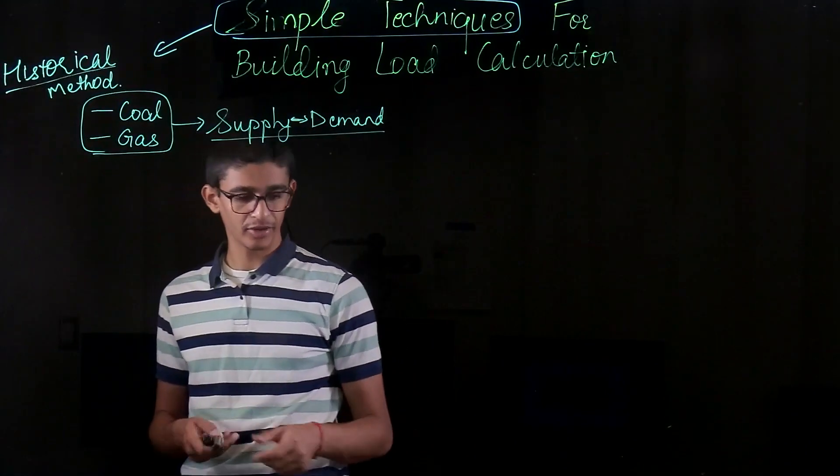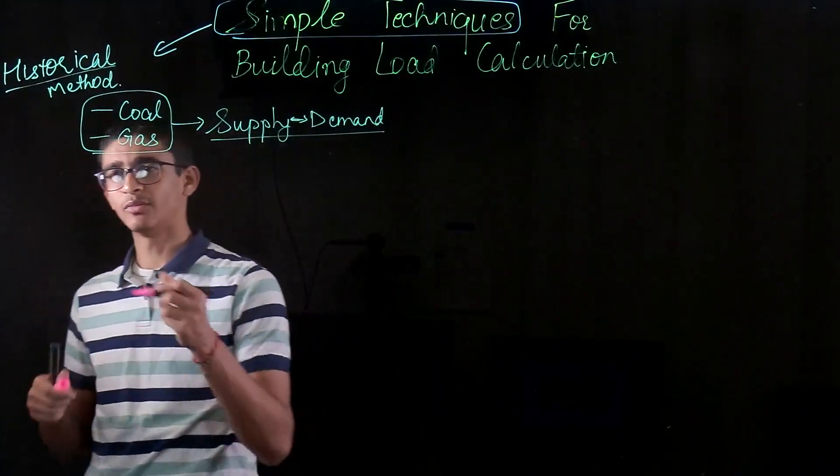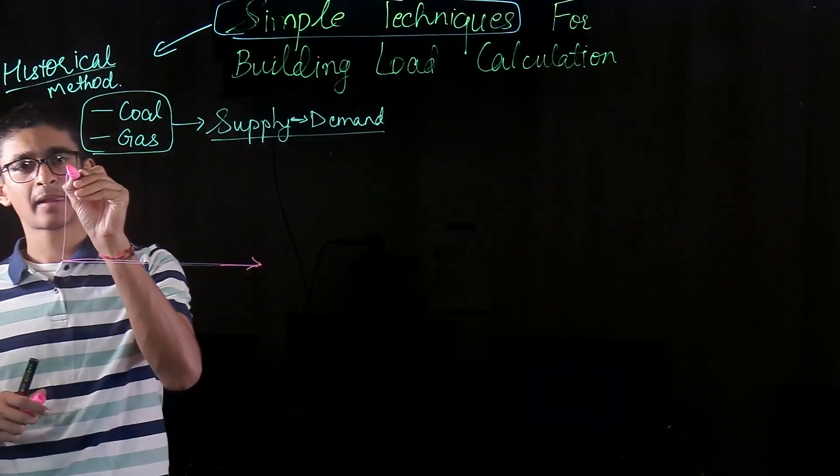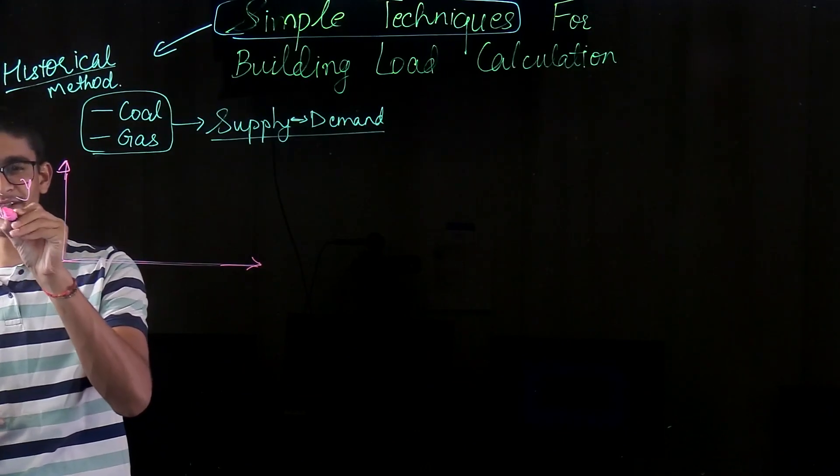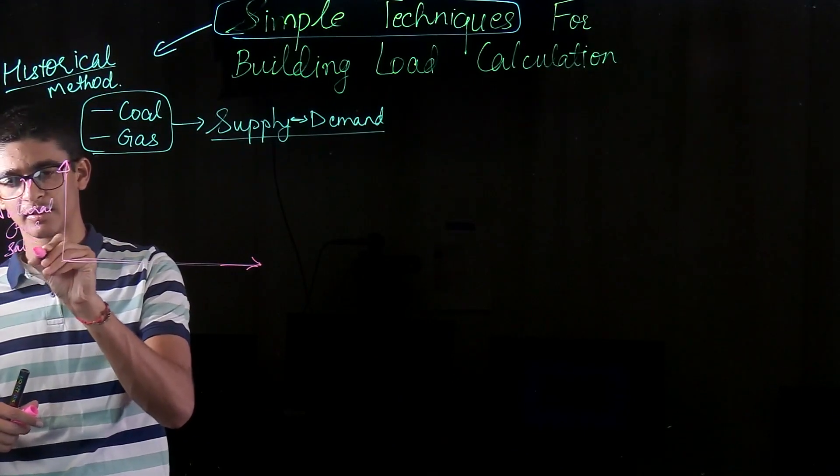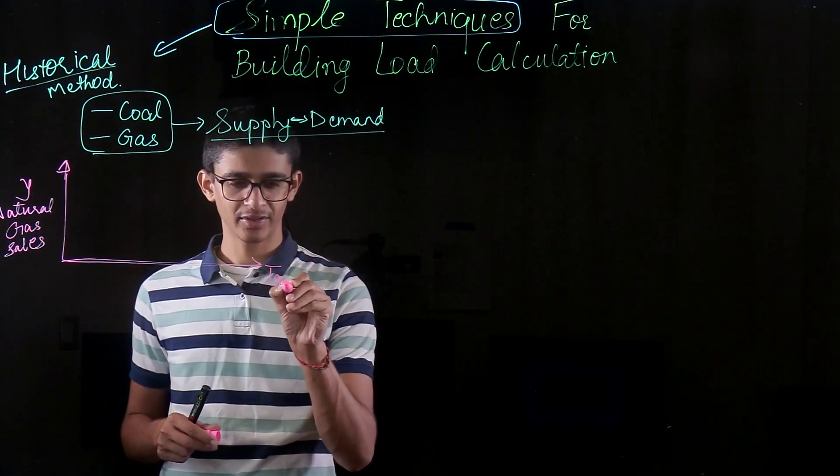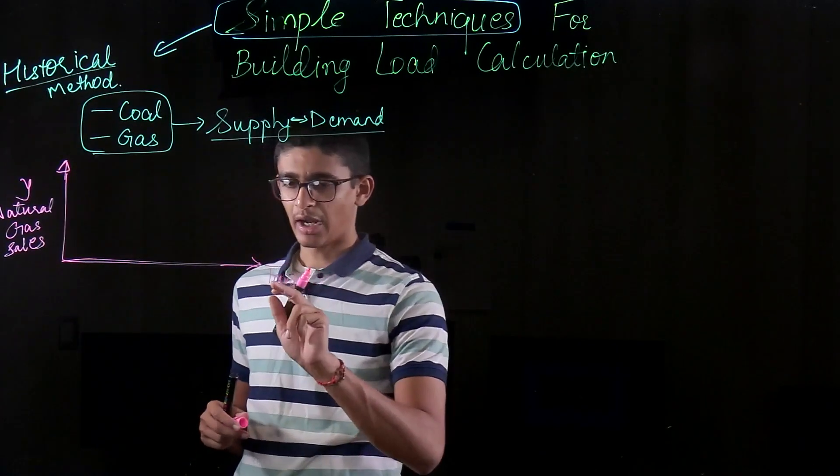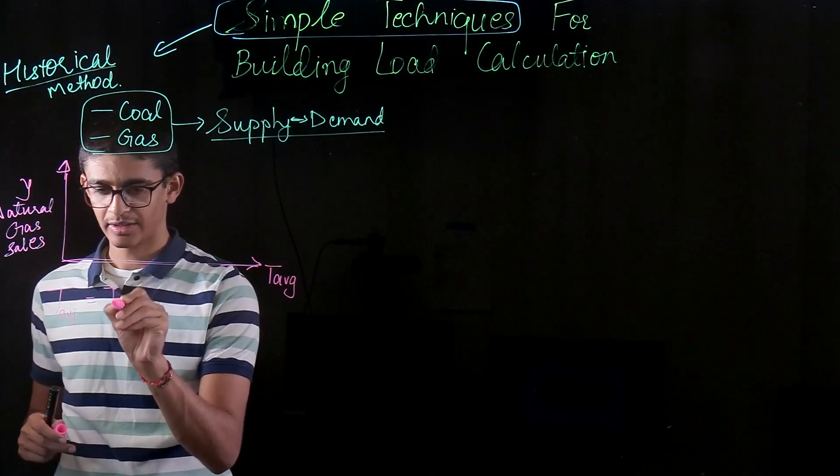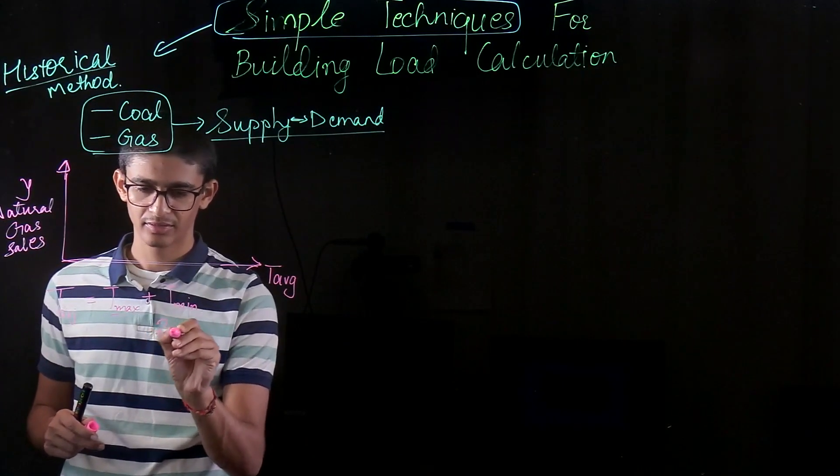And the very basic simple model which they used looks like this. So their model was so simple. What they predicted was this was the y-axis which says natural gas sales. I hope it is visible clearly. And this was the average temperature of the days. So how they calculated the average temperature is very simple.